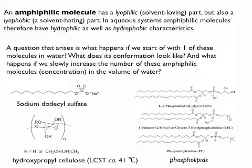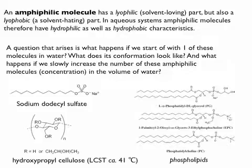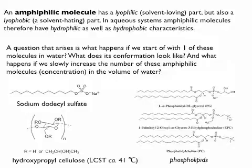If you start with one amphiphilic molecule in water, where can it go? It can happily diffuse around in the water, or it could go to an interface. In a beaker glass it could go to the air-water interface, where it would be more comfortable because the hydrophobic tail could stick out into the air away from the water, effectively locally lowering the surface tension. Alternatively it could adsorb to the side of your glass jar. Any interface in principle could be a substrate for adsorption of molecules or particles, depending on the affinity for that surface.